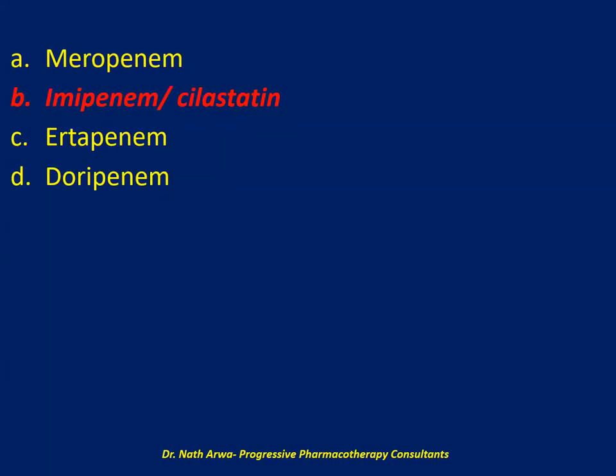I would choose imipenem-cilastatin. Ertapenem should never be used in infections caused by Acinetobacter baumannii since almost 30% of isolates are susceptible and the rest are resistant. Doripenem and meropenem are considered alternate options due to being less potent in vitro against Acinetobacter baumannii compared to imipenem-cilastatin. Imipenem-cilastatin is considered the carbapenem of choice as the predominance of literature addressing treatment of Acinetobacter baumannii infections utilizes imipenem-cilastatin.